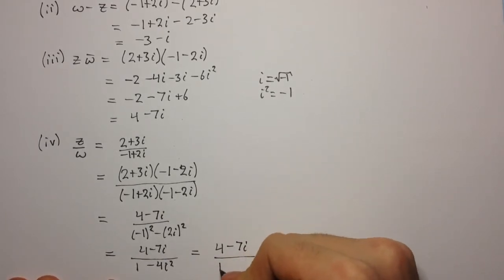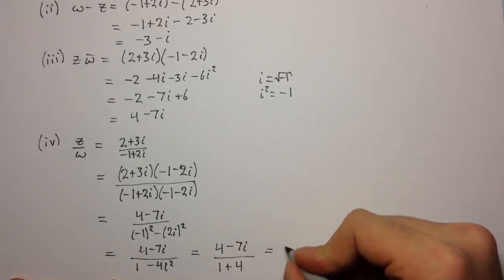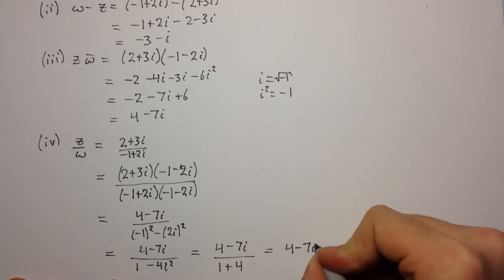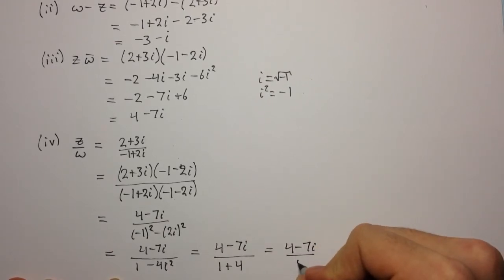When we multiply a complex number by its conjugate, instead of it being a difference of two squares, it's now called a sum of two squares. It's originally a difference, but the i squared is minus 1. This minus 1 and that minus 1 cancel, and we get a sum. So we get the sum of two squares, and this is 4 minus 7i over 5. That's your final answer.